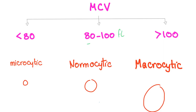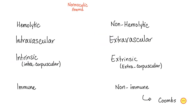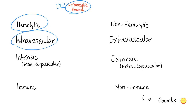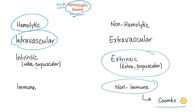In TTP we have normocytic anemia. Is it hemolytic or non-hemolytic? Of course it's hemolytic. Is it intravascular or extravascular? It's intravascular. Is it intrinsic — intracorpuscular, inside the red blood cells — or extrinsic, outside? The problem here is outside the red blood cells. It's not the red blood cells' fault — the platelets decided to form microthrombi. Is this hemolytic anemia immune or non-immune? It's non-immune destruction. Therefore, Coombs testing is negative — both direct and indirect Coombs tests are negative.